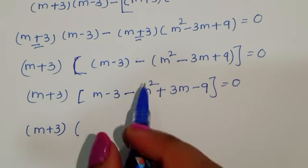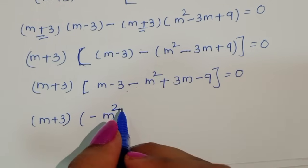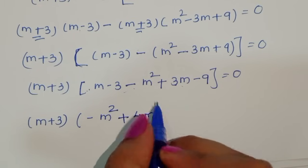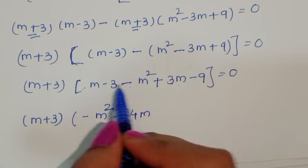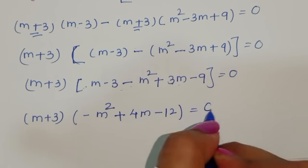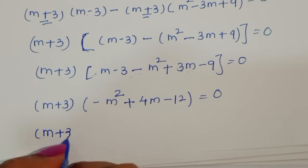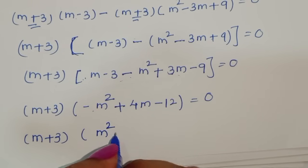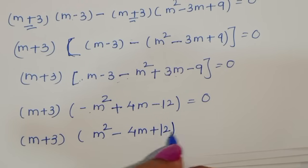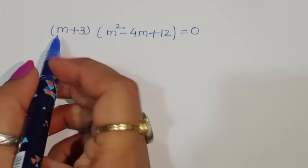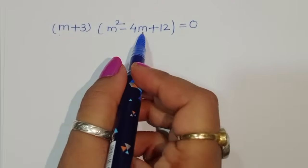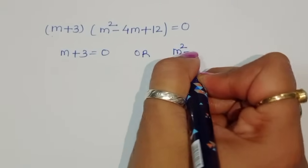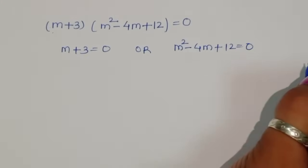Arranging the terms inside: minus m squared plus 3m plus m gives plus 4m, and minus 9 minus 3 gives minus 12. So we have (m plus 3)(minus m squared plus 4m minus 12) equals zero. Multiplying through by minus one: (m plus 3)(m squared minus 4m plus 12) equals zero. This gives us two equations: m plus 3 equals 0, and m squared minus 4m plus 12 equals 0.